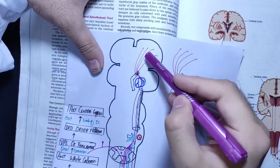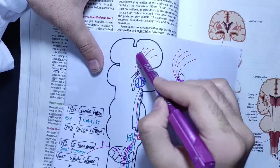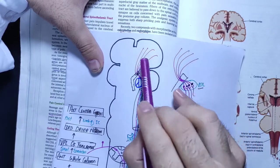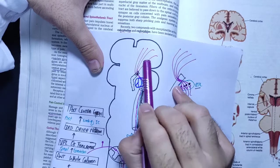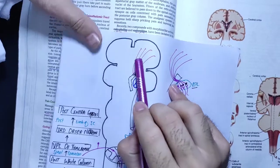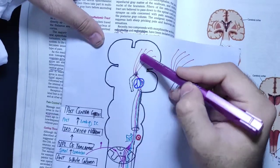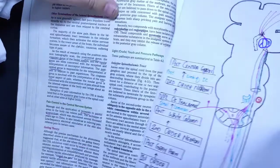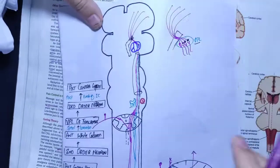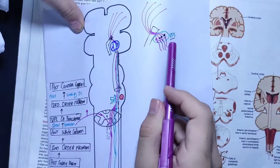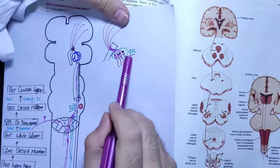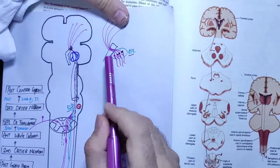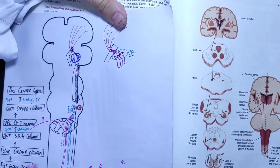What happens is the corona radiata shape. Then it goes into the internal capsule posterior limb, spreads out to the post-central gyrus. When we reach the ventral posterolateral nucleus, we say that here is appreciation of crude touch.